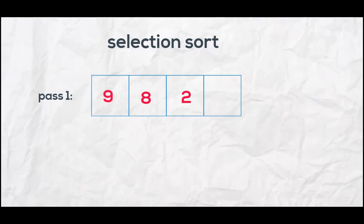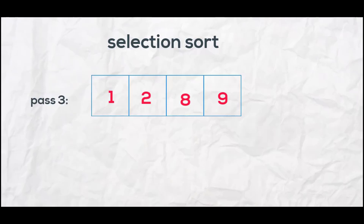We swap 1 and 9. In the second pass we pick the second smallest element and place it in the second position — 2 is the second smallest, so we swap 2 and 8. In the third pass we can see the array is sorted. In selection sort, passes equal the number of elements minus one, which is three.